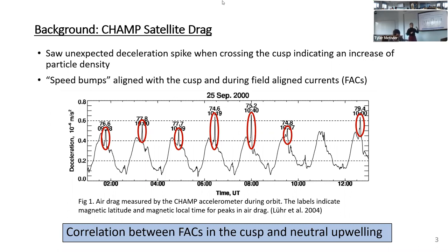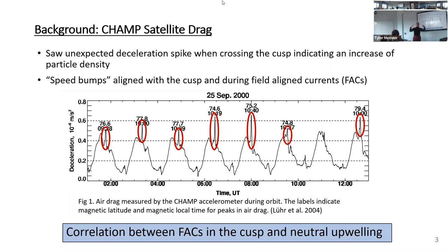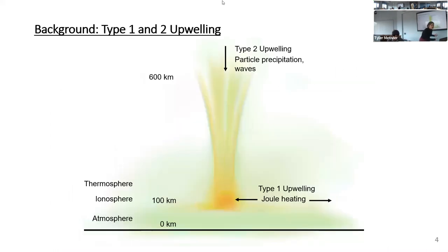That leads to the idea of a large increase in density in the cusp during that time. The speed bumps shown in red are in the cusp region. The CHAMP satellite also saw field-aligned currents, or FACs, during this time, suggesting a large correlation between field-aligned currents and this upwelling in neutrals — this increased density of neutral particles. Before we get into our data specifically, I'm going to talk about different types of upwelling.